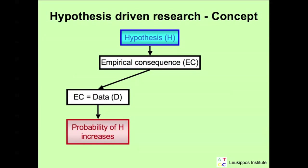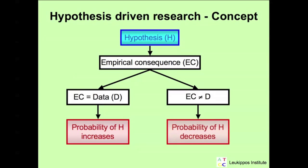If the data are equal to the deduced empirical consequence, we conclude that the probability of the hypothesis increases. In the other case, where the data are different from the empirical consequence, we conclude that the probability of the hypothesis decreases.